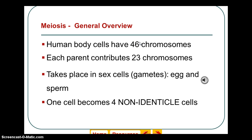Think about this: the mother has 23 chromosomes in her egg, and a father has 23 chromosomes in his sperm. What's 23 plus 23? 46.